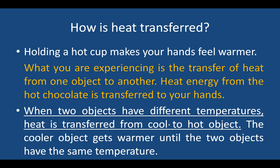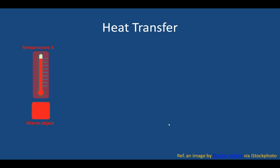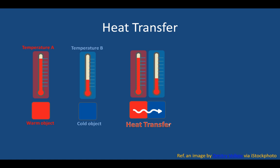When two objects have different temperatures, heat is transferred from the warmer object to the cooler object. The cooler object gets warmer until both objects reach the same temperature. For example, a warm object at temperature A and a cold object at temperature B, when placed together, will transfer heat from the warm object to the cold object until both reach thermal equilibrium.